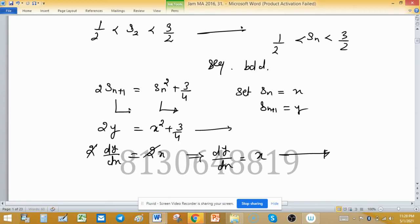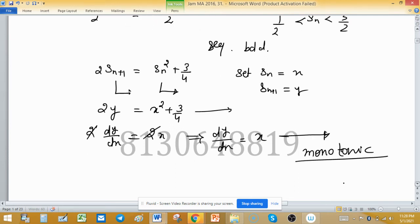Derivative of constant will be 0. It means that DY upon DX equal to X. The sign of derivative doesn't change, means this sequence is monotonic. And D2Y upon DX square is equal to 1 means greater than 0. This is saying that positive, decreasing. Bounded and monotonic decreasing sequence will be convergent.